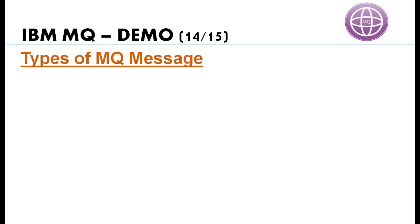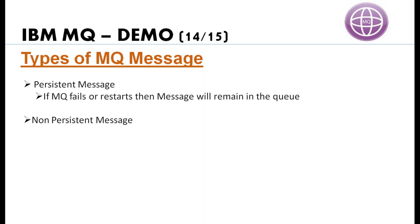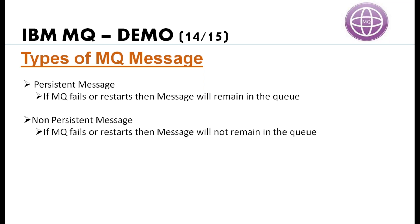Now let's see the types of messages. We have persistent messages and non-persistent messages. For a persistent message, if MQ fails or is restarted, your message will remain in MQ — it will be safely stored inside MQ. But for a non-persistent message, MQ will never guarantee that your message remains on the queue. If MQ gets restarted, your message will vanish — there is no guarantee MQ can recover that message. When designing an application or MQ architecture, you first need to decide whether messages should be persistent or non-persistent, and design the architecture accordingly.